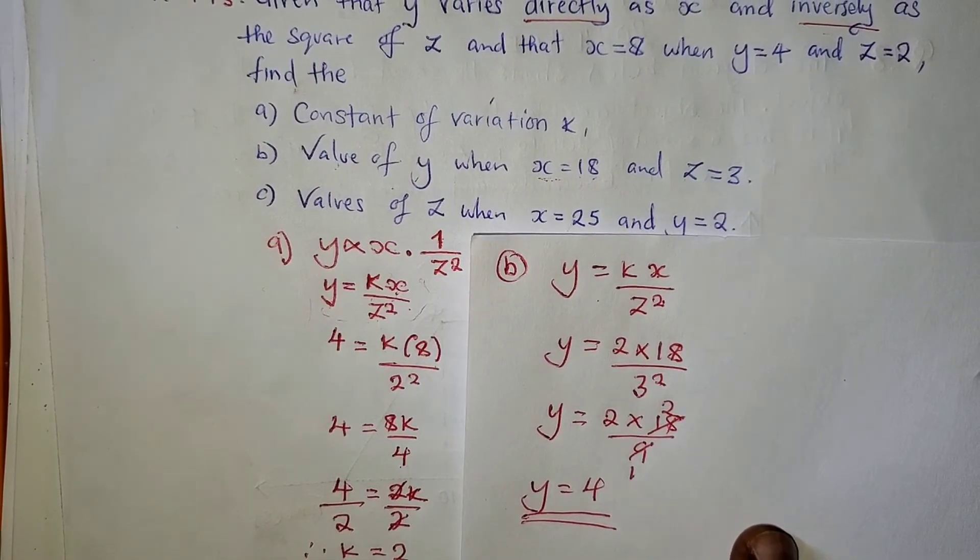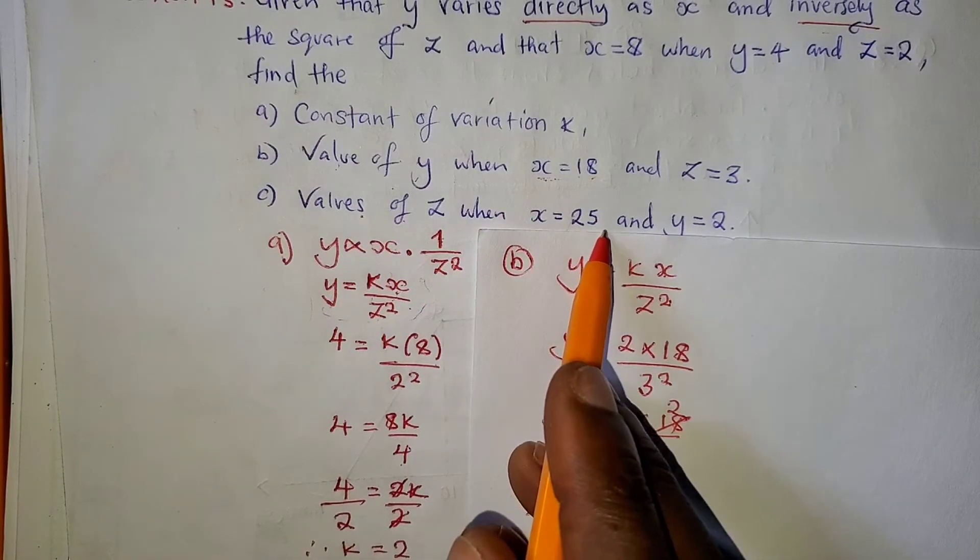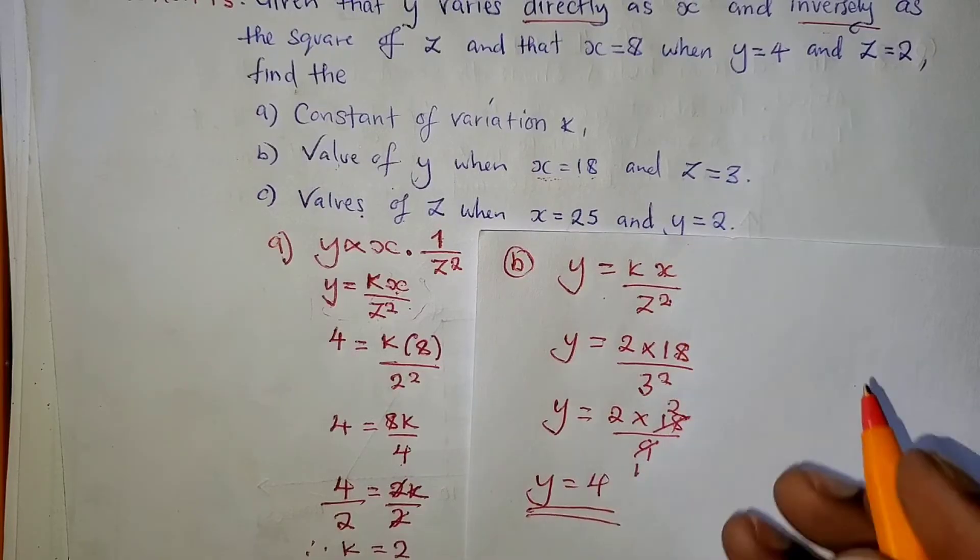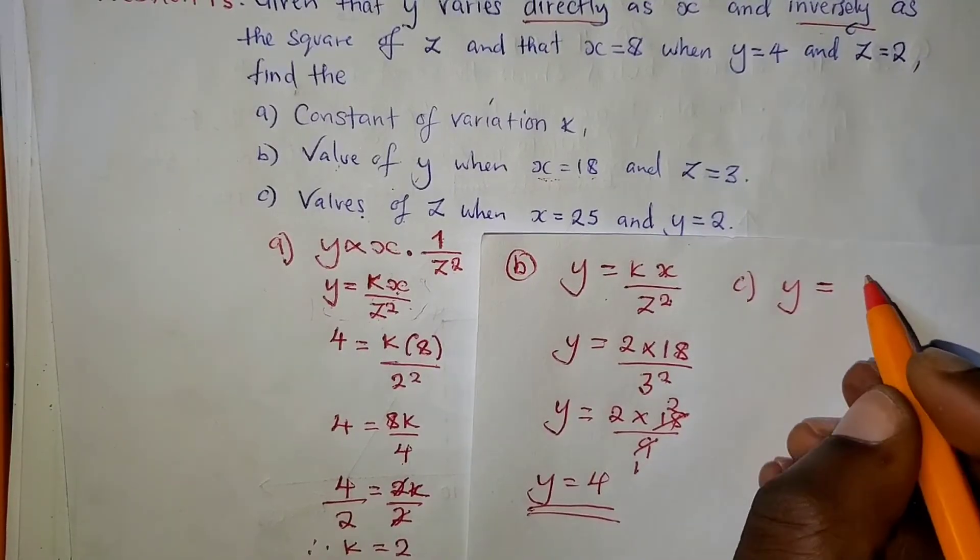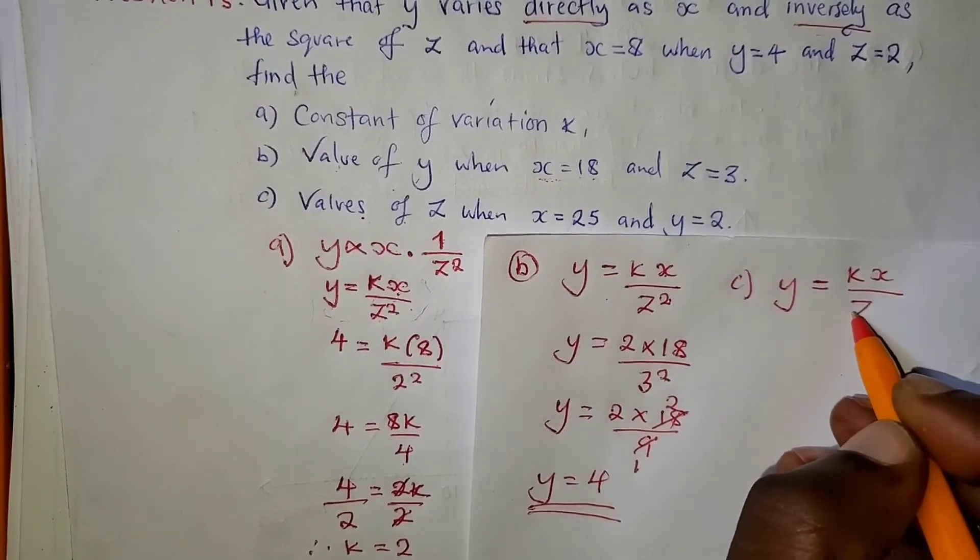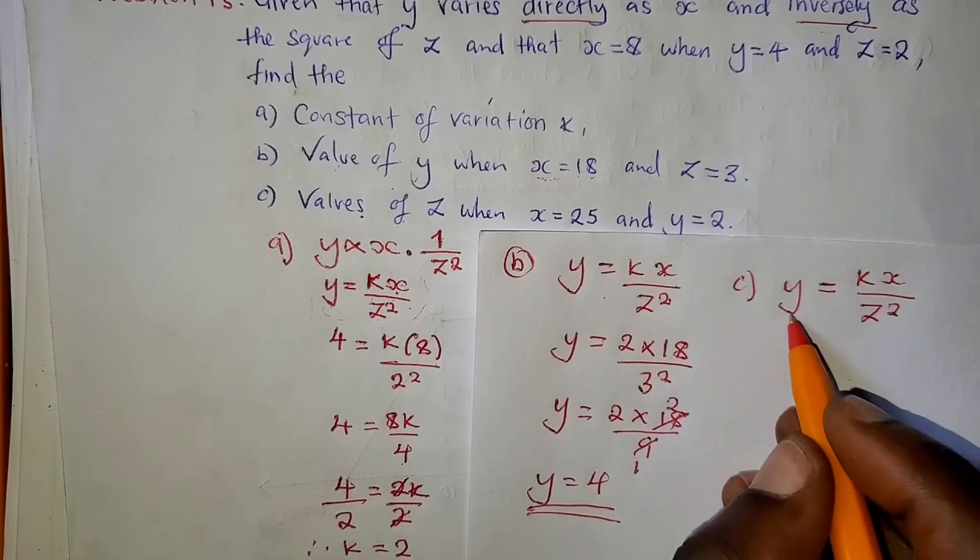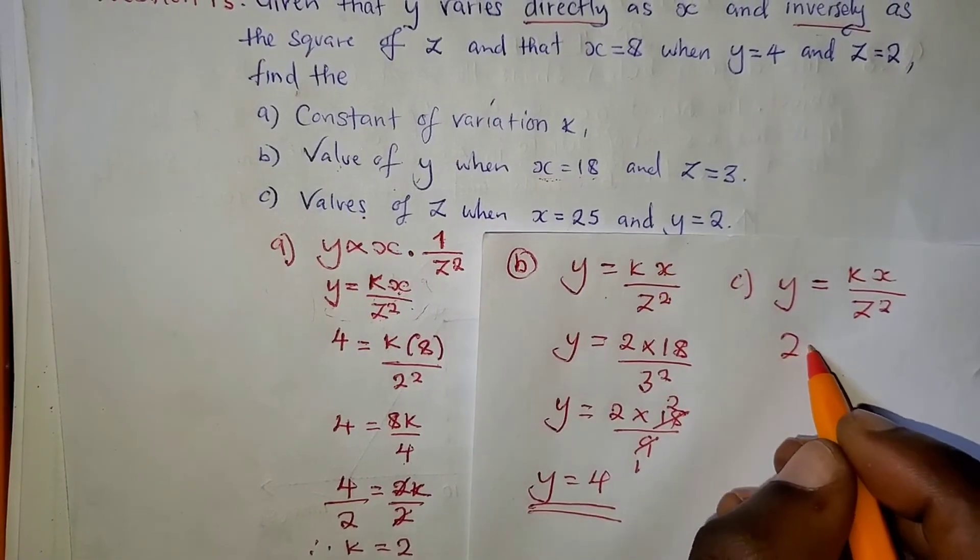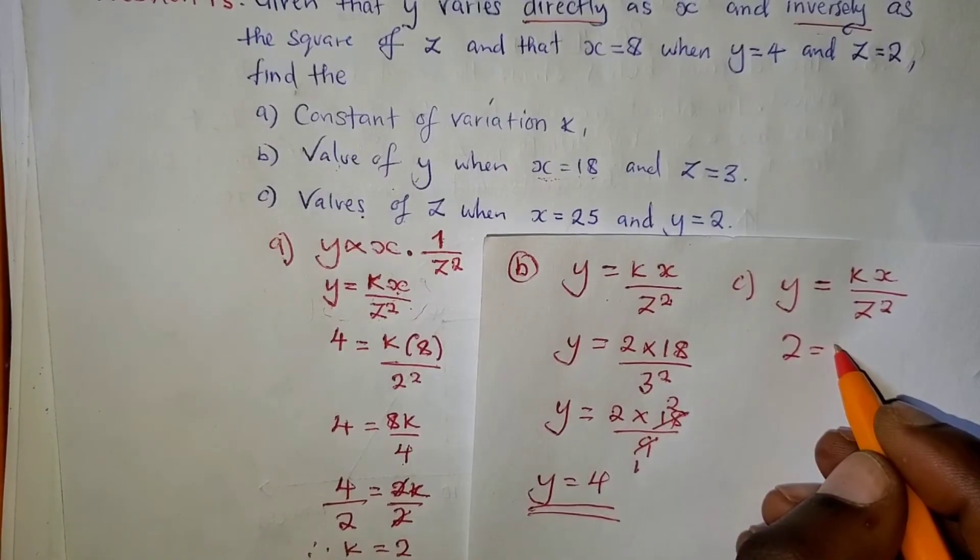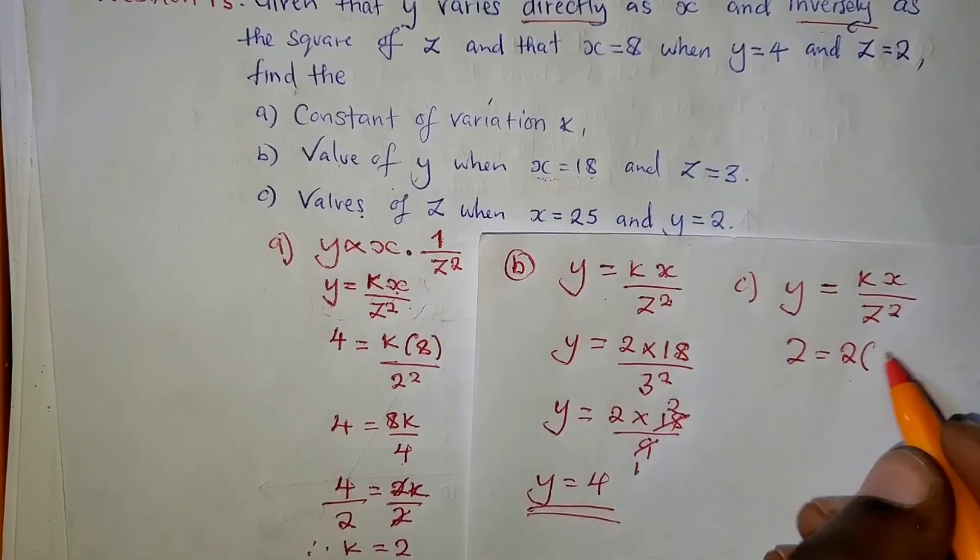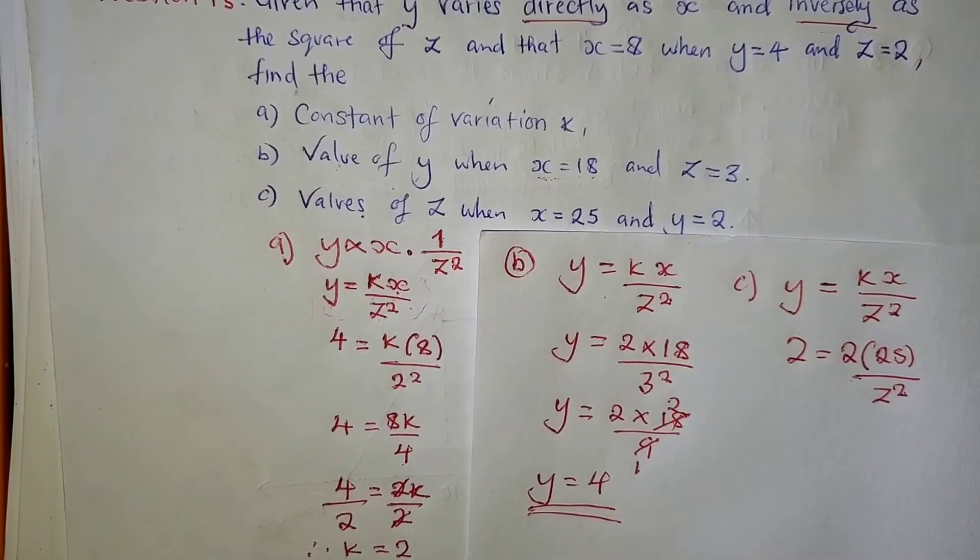Now, the last question, they are asking us to find the values of Z when X is 25 and Y is 2. So using the same formula, we're going to say Y equals KX over Z squared. Then we're going to say Y, the value of Y is 2. K is the constant of variation, which is 2. X is 25. Z squared is just Z squared here.